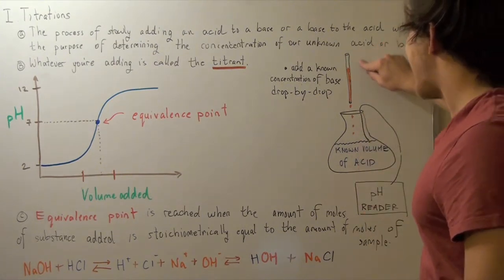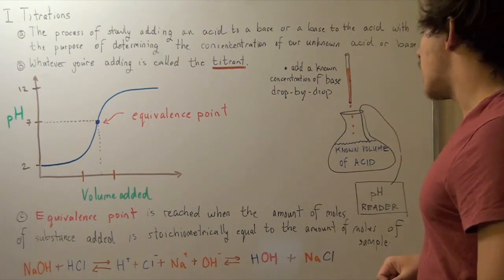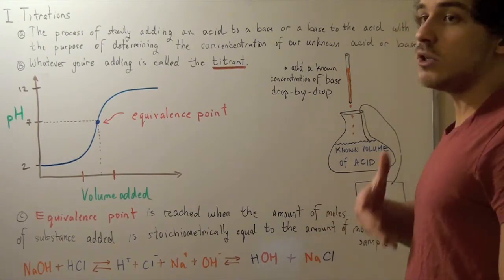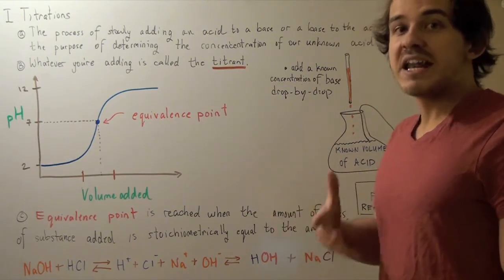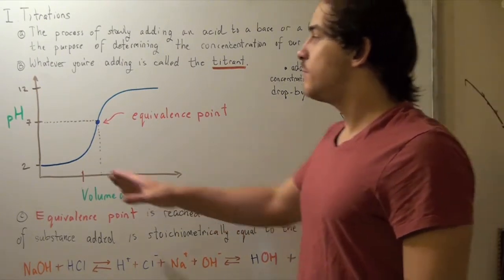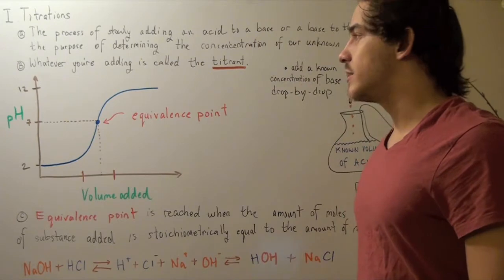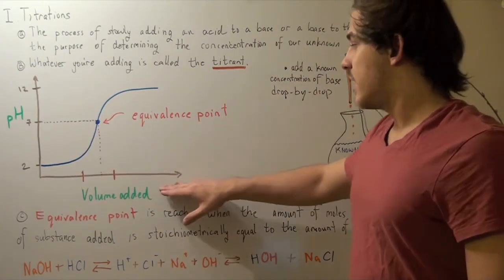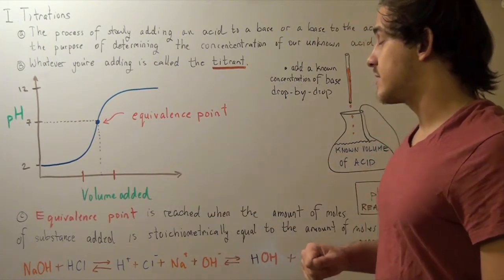Now, as I begin slowly adding drop by drop, what will happen to our pH? Well, it will increase, right? But how will it increase? Let's look at the graph of pH versus volume added, where pH is the y-axis, and volume added of our base is the x-axis.